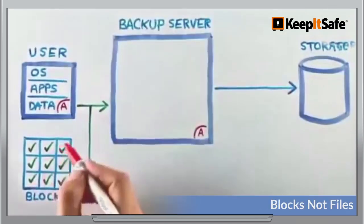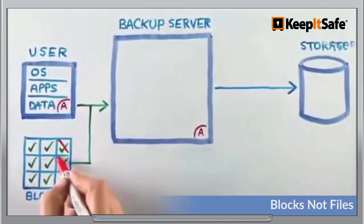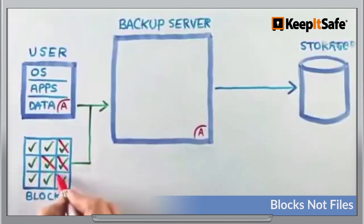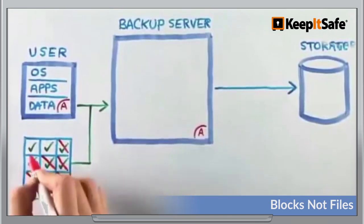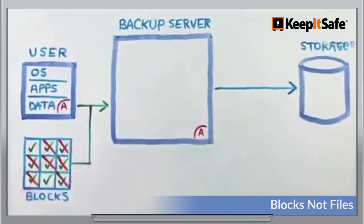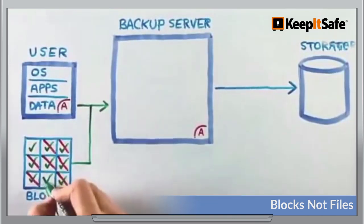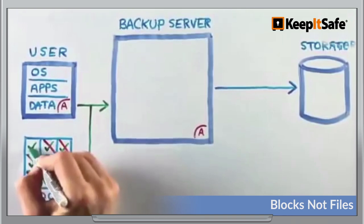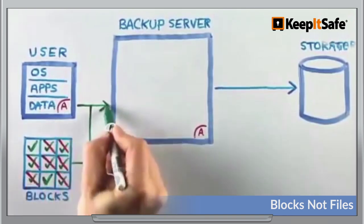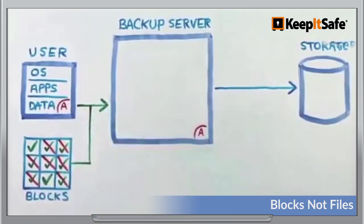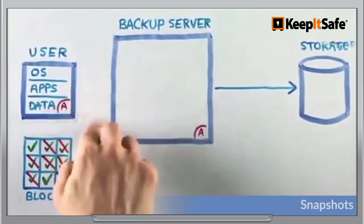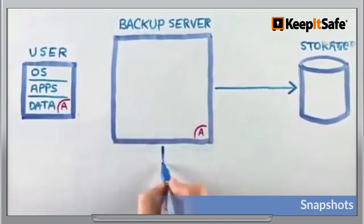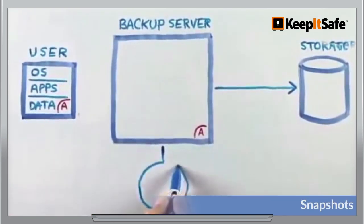By working down to the block level rather than up at the file level, Keep It Safe DR keeps backup batches lighter. This detailed approach saves time and space. Snapshots are no longer time and resource intensive.